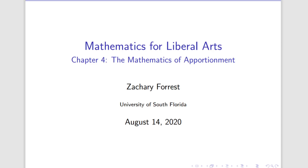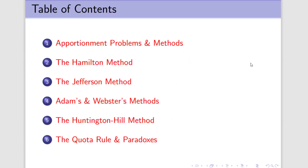Hello there, and welcome back to Mathematics for Liberal Arts, Chapter 4. To remind you of where we were last time, we went through Section 4.1, which is apportionment problems and methods. We found that apportionment problems are fairly standard and all over the place, but they may be a little bit trickier than they first appear, so we need to introduce some actual methods that will help us.